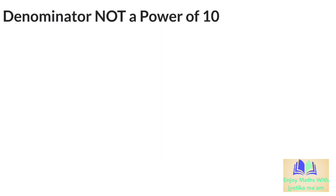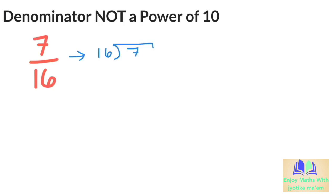Let us do more practice with an example where the denominator is not 10. Consider 7 over 16. Is it the same as 7 divided by 16? Without a calculator we will use the long division method. 16 goes into 7 zero times because it is too big. So we add a 0 and a decimal point. Now 16 goes into 70, 4 times. 4 times 16 is 64, so we have a remainder of 6.